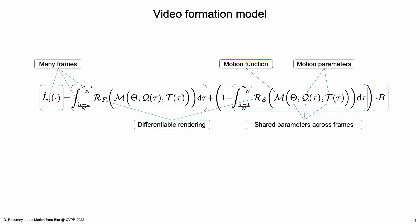Differentiable rendering is used to render foreground appearances and silhouettes that are averaged to model the motion blur and combined with the background. Exposure gap is used in the integral bounds.